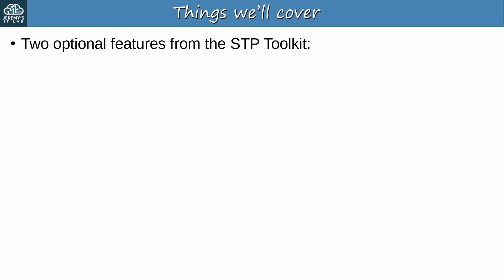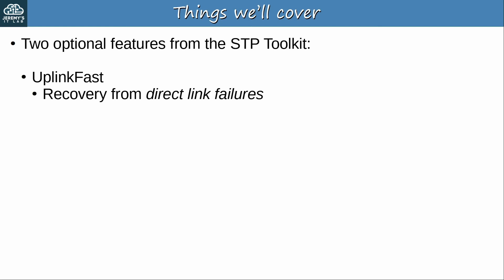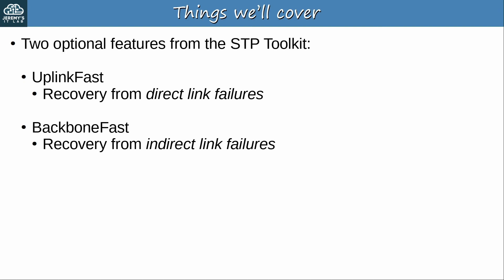Here's what we'll cover in this video. We'll cover two optional features from the so-called STP toolkit, both of which aim to speed up reconvergence after a topology change. First we'll look at UplinkFast, which speeds up recovery from direct link failures. Then we'll cover BackboneFast, which speeds up recovery from indirect link failures — and we'll cover what an indirect link failure is in this video too.